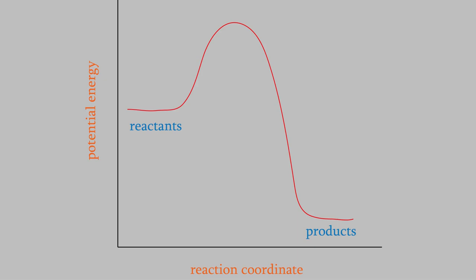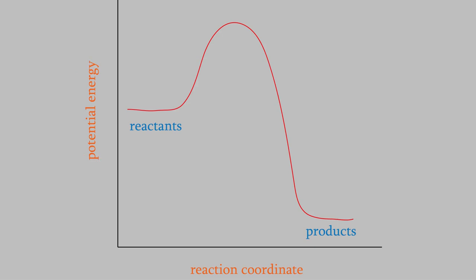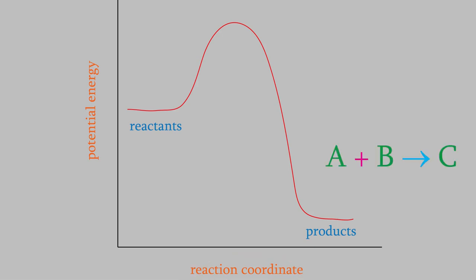For example, here are some molecules that might be reactants in a chemical reaction. They're color-coded according to how much kinetic energy they have. The red ones are moving quickly and have the highest kinetic energy, and the blue ones have the lowest kinetic energy. When two molecules collide, if their combined energy is high enough, it might be possible for a chemical reaction between them to happen. Here's a graph that can help us think about this.